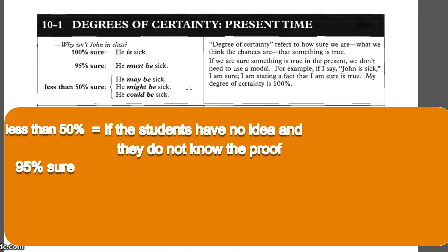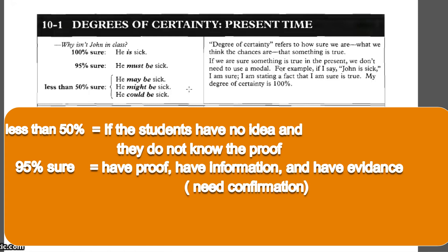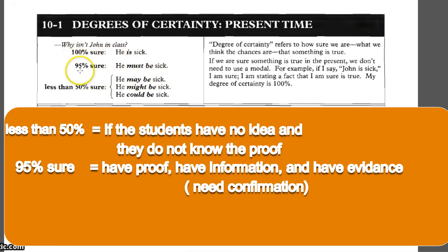What if the student has a little proof about the case? For example, last night one student saw John near a drugstore, but didn't know if John was buying medicine for himself. This is evidence, but it needs confirmation. So we use the 95% level: 'He must be sick.'